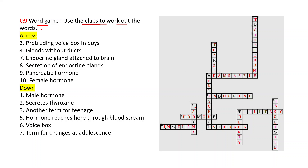Use the clues to work out the words for the crossword puzzle. Across: third — protruding voice box, answer is Adam's apple. Fourth — glands without ducts, these are known as endocrine glands. Seventh — endocrine gland attached to brain, answer is pituitary, spelling P-I-T-U-I-T-A-R-Y. Next — secretion of endocrine glands, answer is hormone, H-O-R-M-O-N-E.